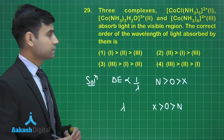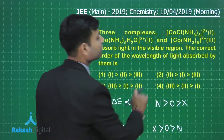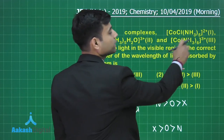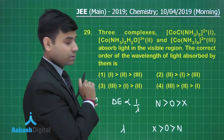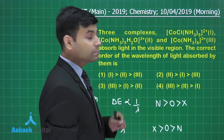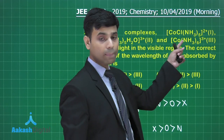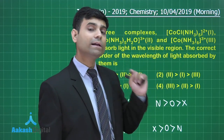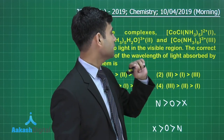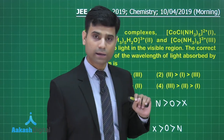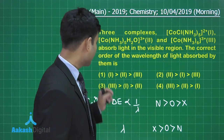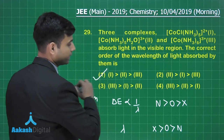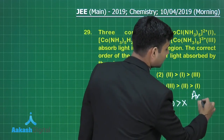Looking at the ligands: the first complex has Cl, the second has H2O, and the third has ammonia. So the maximum crystal field splitting energy is for ammonia, then water, and minimum for chlorine. Therefore, wavelength is maximum for the first complex, then second, and least for the third. So the order is 1 > 2 > 3, given in option 1 — hence the correct answer is option 1.